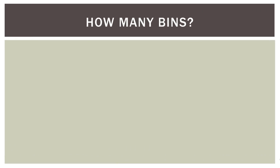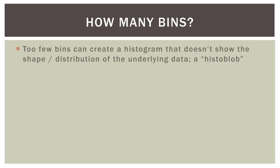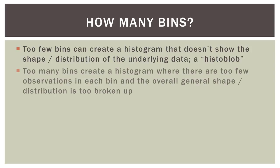An obvious question is: how many bins should you have? And the thing is, there's no easy or definitive answer to that question. Too few bins can create a histogram that doesn't show the shape or the distribution of the underlying data — what I call a histoblob — because you can't see how people are distributed among the different age groups. Too many bins create a histogram where there are too few observations in each bin, and then the overall shape of the distribution is too broken up.